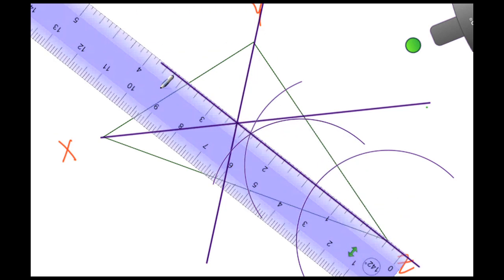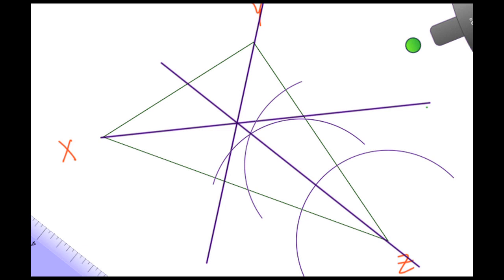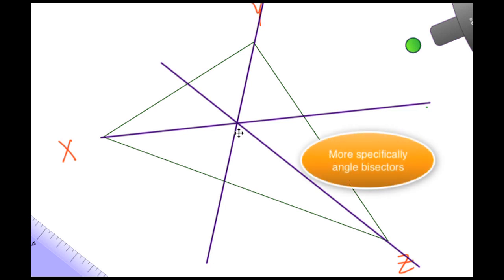One last time, let's go ahead and clean up the extras that we have here on the drawing. This location here where all these lines intersect is the point of concurrency. In this particular example, since we're using bisectors, this is called the incenter. With the incenter, we're now able to create a circle that's going to be inscribed inside of this triangle.